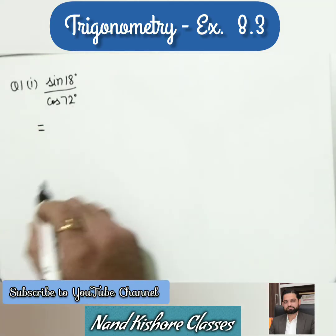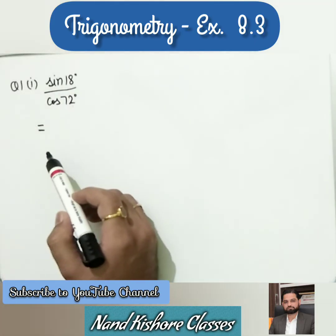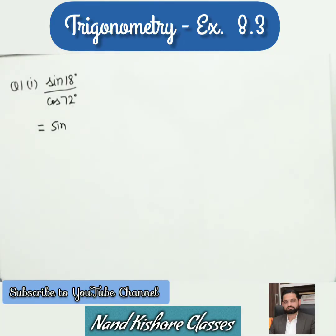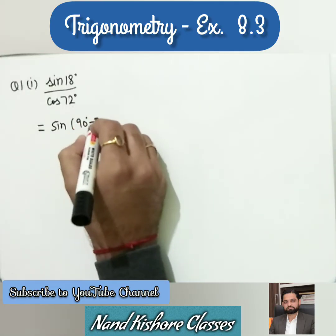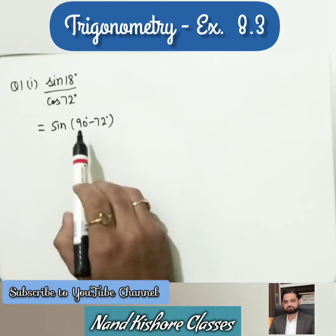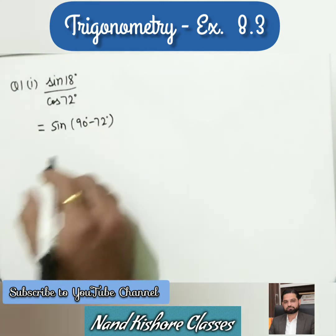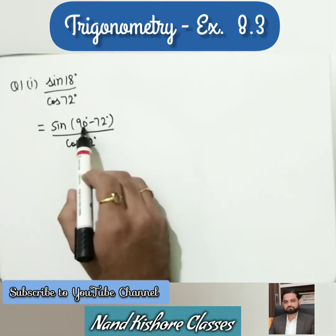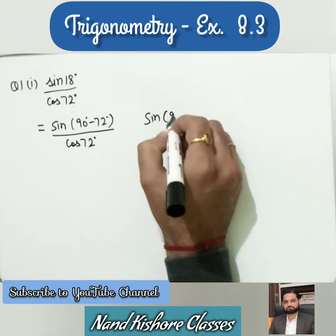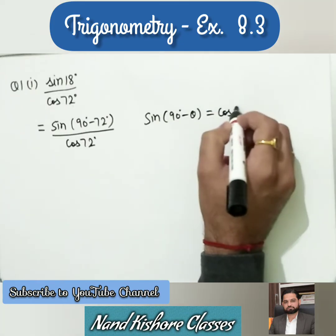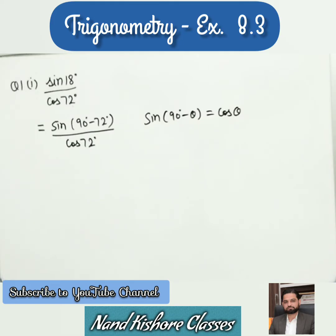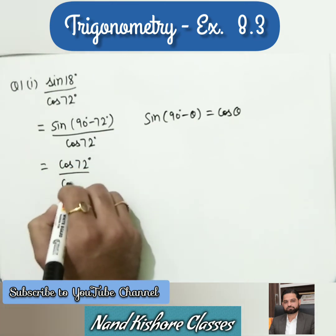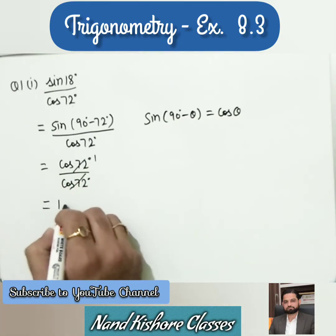For sin 18 over cos 72: we can write 18 as 90 minus 72, so the numerator becomes sin(90 - 72). Using the formula sin(90 - θ) = cos θ, we get cos 72. The denominator is already cos 72, so these two cancel and the final answer is 1.